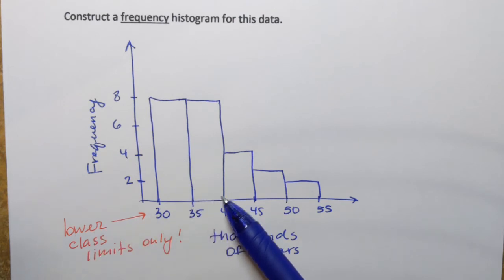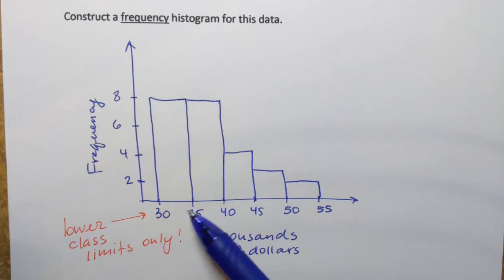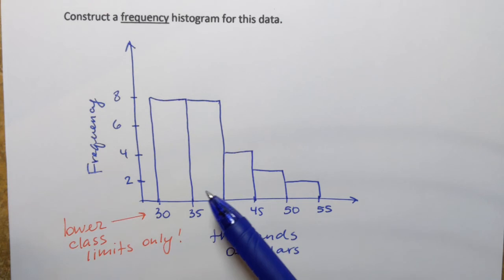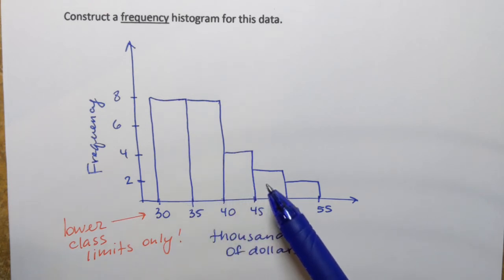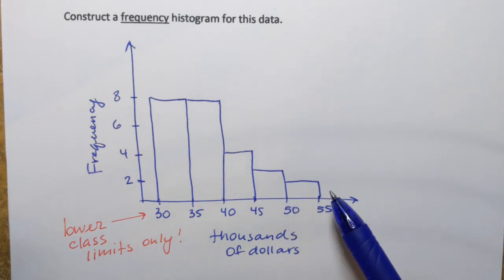Well, we can say that there are more states, right? Remember frequencies, how many? So there are more states based on this picture. There are more states that have average household income on the lower end. And there are less states that have average household income on a higher end.